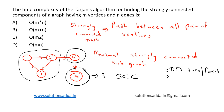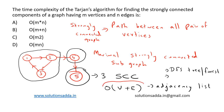DFS takes O(V + E) for a graph represented using an adjacency list, where V represents the number of vertices and E represents the number of edges. Based on the options, we can map this to option B: O(m + n), where m is the number of vertices and n represents the number of edges. So this boils down to O(m + n) — option B is the correct answer.